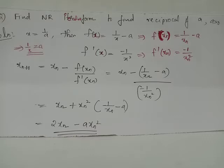Now we have the general Newton-Raphson iterative formula given by x_{n+1} equals x_n minus f(x_n)/f'(x_n). Here in this general formula, we substitute f(x_n) equals 1/x_n minus a and f'(x_n) equals -1/x_n².